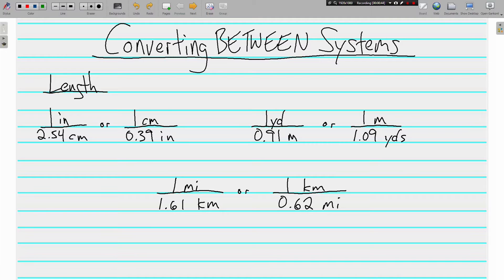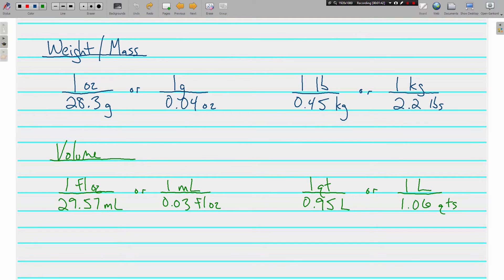Here on this page we've got different conversion rates for length. The first one: one inch equals 2.54 centimeters, or you can turn that around - one centimeter is 0.39 inches. One yard is 0.91 meters, or one meter is 1.09 yards. And then there's another one for miles and kilometers. What's important to know is that these decimals are rounded. When you're going between systems the numbers are not as pretty as 12 inches in a foot or 16 ounces in a pound. I've rounded a number of the decimals to the hundredths place and that'll come into play when we do some examples.